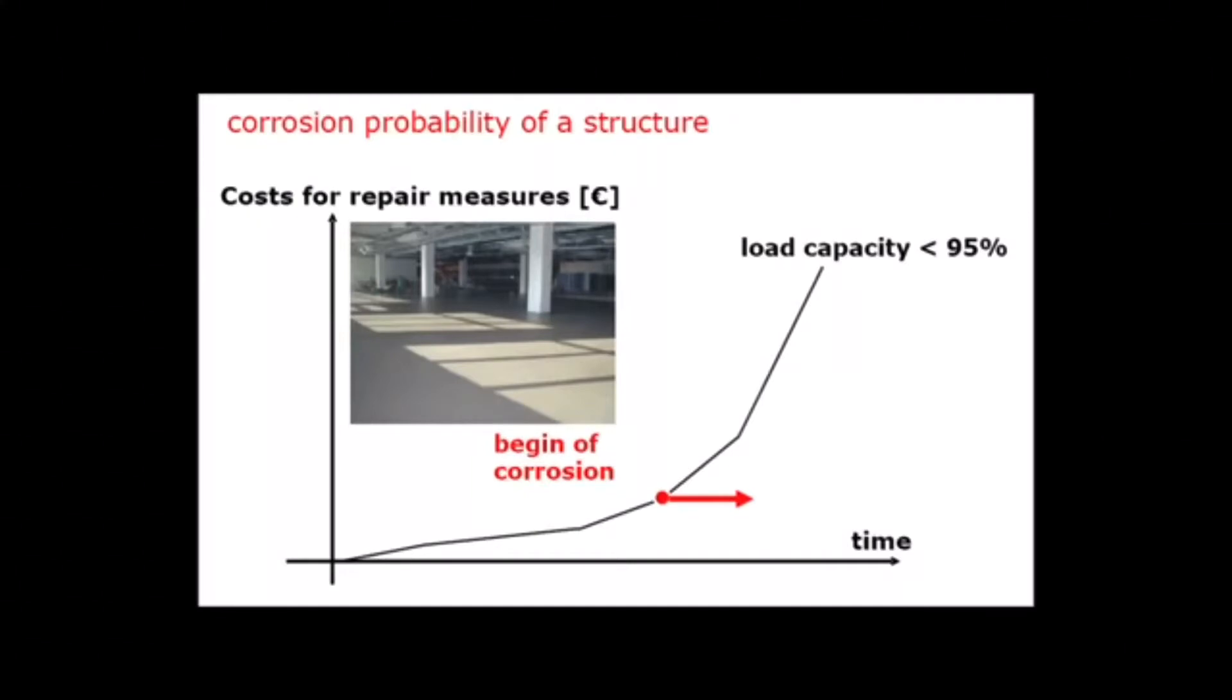This passive film is decomposed due to the reaction of concrete with atmospheric carbon dioxide or by the penetration of substances aggressive to steel, in particular chlorides from de-icing salt or salt water.